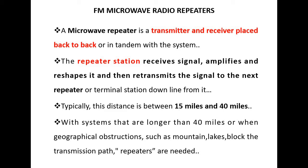The permissible distance between an FM microwave transmitter and a receiver depends on several factors such as transmitter output power, terrain, atmospheric conditions, system capacity, etc. Typically this distance is between 15 miles and 40 miles. With systems longer than 40 miles, or when geographical obstructions such as mountains or lakes block the transmission path, repeaters are needed.